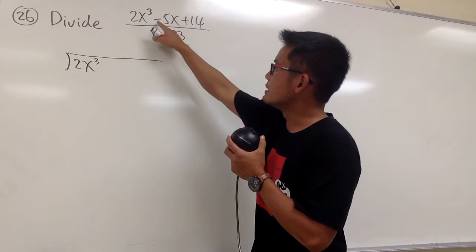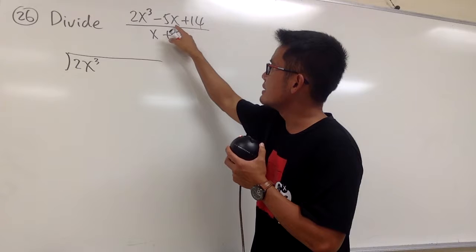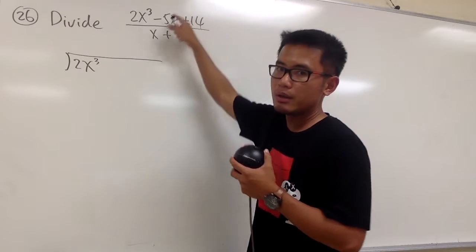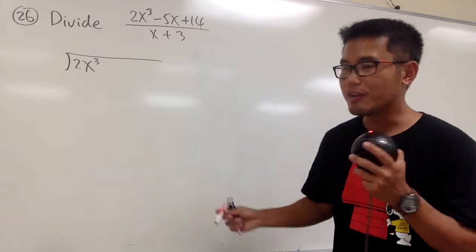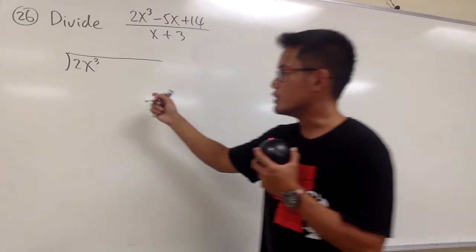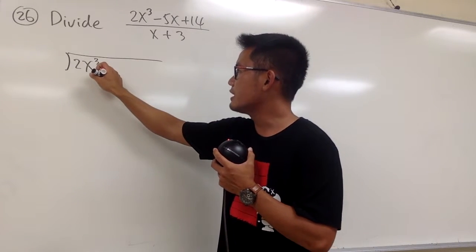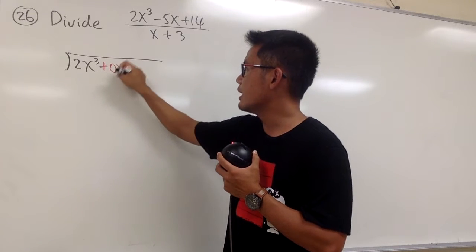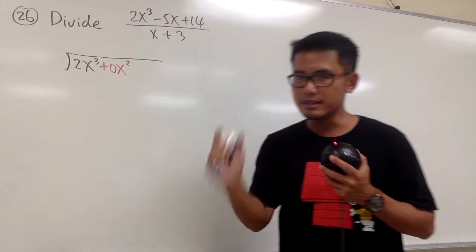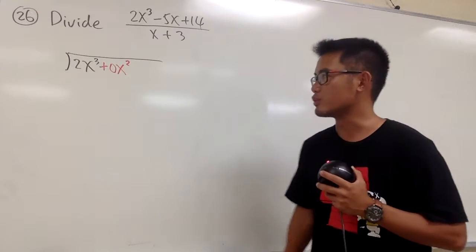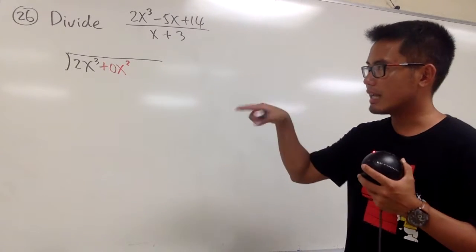Next, even though it says right here we have negative 5x, and this is to the first power, do we have any x squared term? We don't, right? However, when we are doing the long division, we still have to put that down. Let me just indicate that we have plus 0x squared, like this. This is like a placeholder. You have to make sure you have that 0 right over there, line up with all the powers.